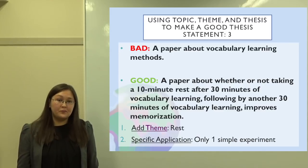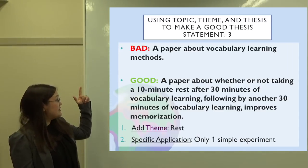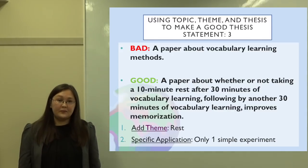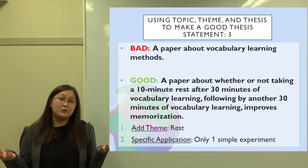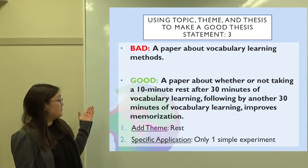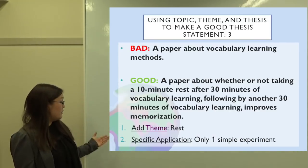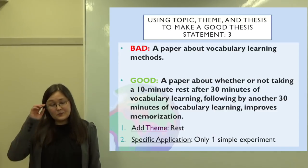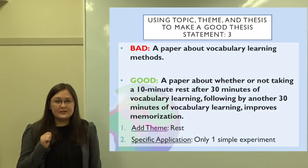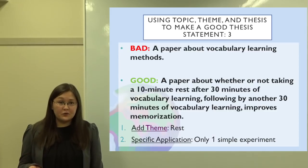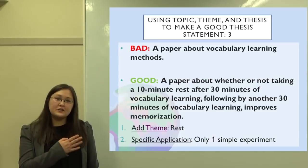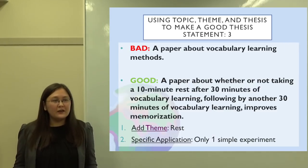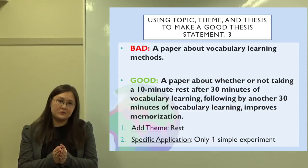Let's look at an example. From the previous flip, a paper about vocabulary learning methods would be way too broad. Here you can see a good way of narrowing: it has been narrowed with a theme of rest and with a specific application — one simple experiment. If you're doing your own experiment for your paper, you definitely need to choose something that is doable, feasible, and not too broad. So this has been sufficiently narrowed. But how do we make the thesis statement once we have narrowed the themes to this point?